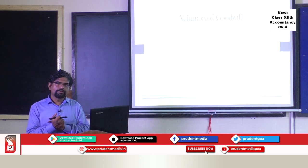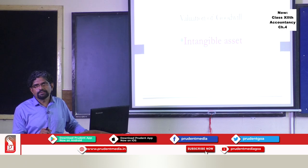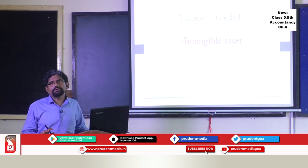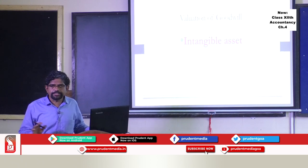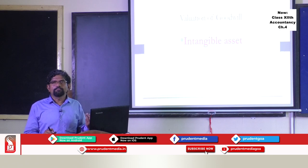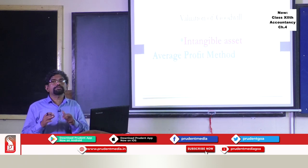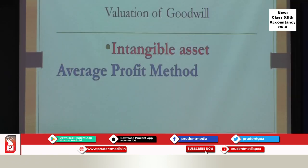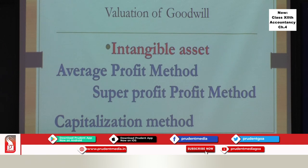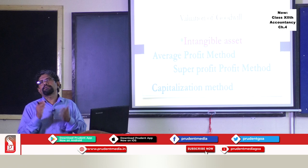Goodwill is an intangible asset. It is not like furniture, machinery, or land and building — those are tangible assets, which are easy to value. Goodwill is intangible; no one can see it. We can only experience goodwill through the super profit earning ability of a business. So goodwill valuation becomes estimation. We estimate goodwill using certain methods: the average profit method, the super profit method, and the capitalization method. These are estimates, not actual valuation like a tangible asset.